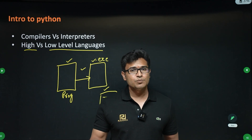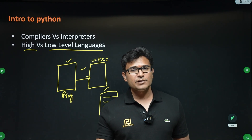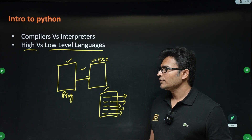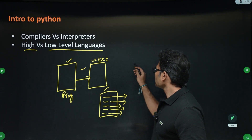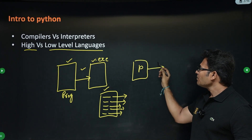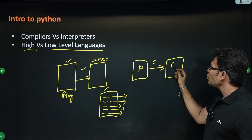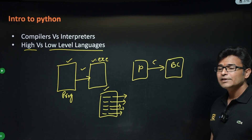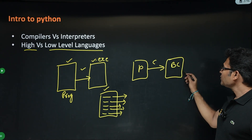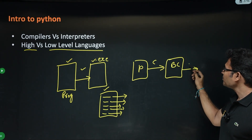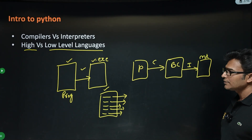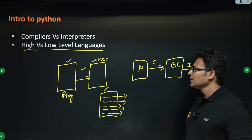Sometimes we may use both. For example, Java is both compiled and interpreted, and Python is also both compiled and interpreted. Generally, if you give a program to the compiler, it will generate bytecode. That bytecode is then given to the interpreter, which generates machine code line by line. This combined approach is also popular.